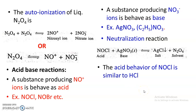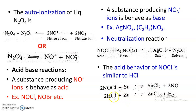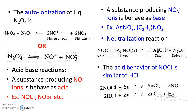The acid-base behavior of NOCl is similar to HCl. Just as zinc metal added to HCl produces hydrogen gas and zinc chloride (a metal salt), similarly when tin metal is added to NOCl there is formation of nitric oxide gas and tin chloride (the salt). Therefore, nitrosyl chloride (NOCl) acts as an acid.